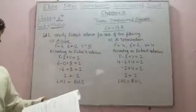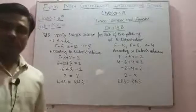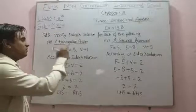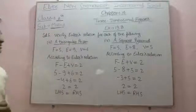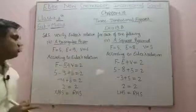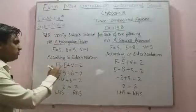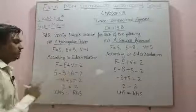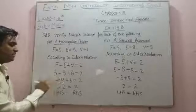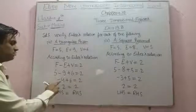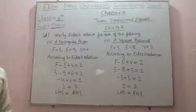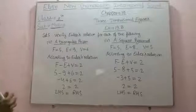In the third part, we have to verify for a triangular prism. In a triangular prism, number of faces are 5, number of edges are 9, and number of vertices are 6. According to Euler's relation, F minus E plus V equals 2. On place of F we write 5, E equals 9, and V equals 6. So 5 minus 9 plus 6 equals 2: 5 minus 9 gives minus 4, and minus 4 plus 6 equals 2. So 2 equals 2, therefore LHS equals RHS, and we can verify Euler's relation for a triangular prism.